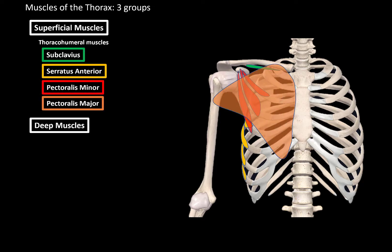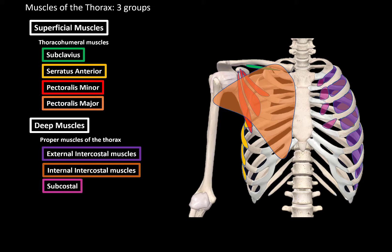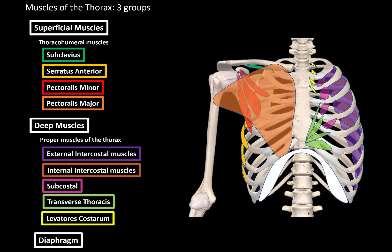Then we have the deep muscles of the thorax, also called the proper muscles of the thorax, because they both originate and insert in the thorax. These are the external intercostal muscles, internal intercostal muscles, subcostal muscles, transverse thoracis, and the levator costarum. The third group is the diaphragm, which is also considered a muscle of the thorax — we're not gonna talk about the diaphragm in this video; there's gonna be a separate video about this one.